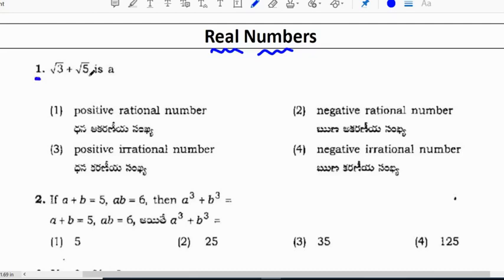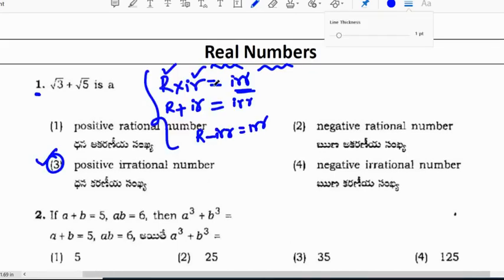First question: root 3 plus root 5 is an irrational number — a positive irrational number. The product of a rational and irrational number is irrational. The sum of a rational and irrational number is also irrational.